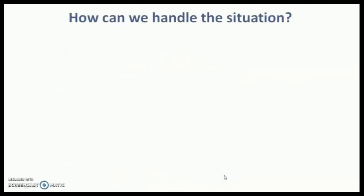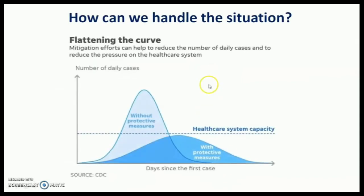So how can we handle the situation? The situation can be handled by flattening the curve. This means that the number of patients or infected individuals at a particular time — if it is high, then the hospitals and other healthcare facilities will become crowded and individual care will not be possible.